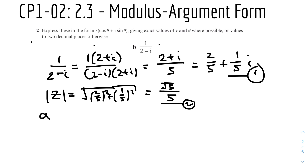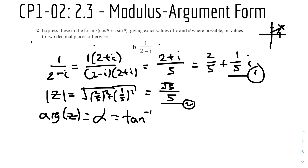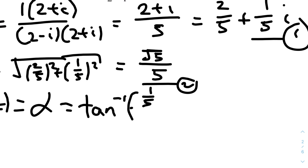Now we find the argument of z. We know z lies in the first quadrant because both components are positive. Therefore the argument is just the angle α, which equals arctan(y/x) = arctan((1/5) ÷ (2/5)). Putting that into the calculator gives us 0.46 to two decimal places.